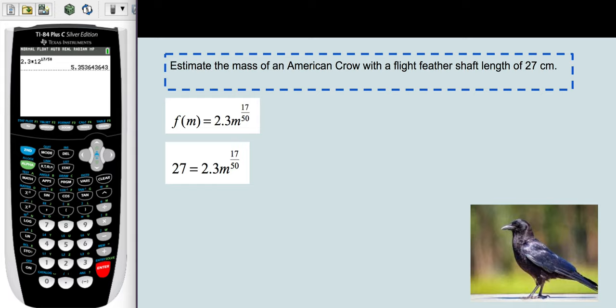We need to divide off the coefficient on m first. We'll divide both sides of the equation by 2.3 to make that happen. Go ahead and leave that left-hand side, 27 over 2.3, in its fraction form. You'll get 27/2.3 = m^(17/50),